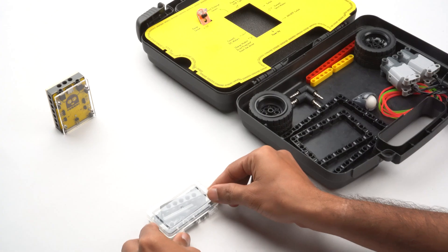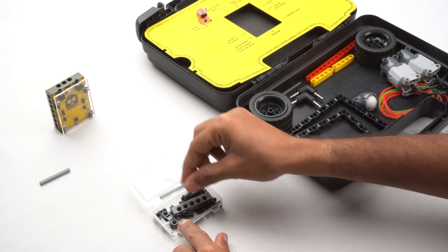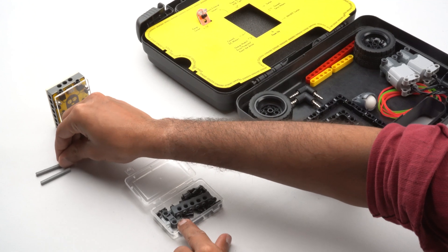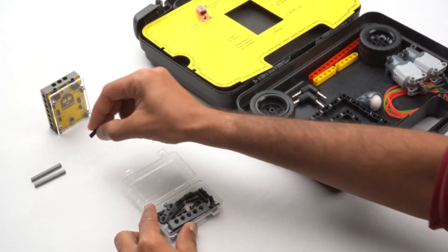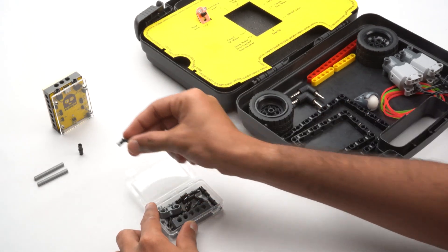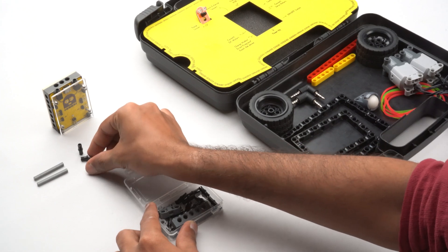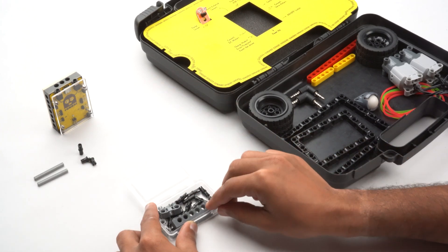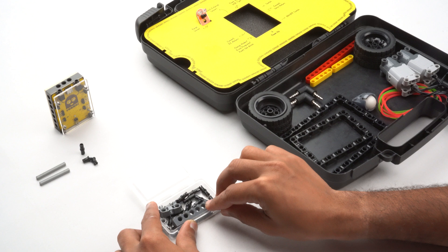Lastly, we have axles and two types of pegs. The axles connect components to the motor allowing them to rotate. We have friction pegs and 90 degree pegs which help connect the beams and blocks together securely. With these, you can create stable and flexible connections for your models.